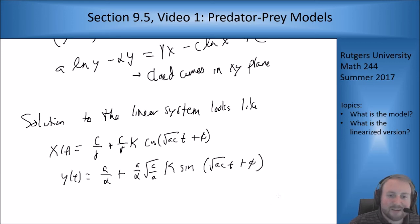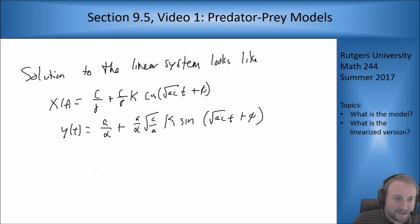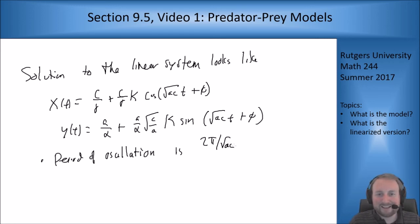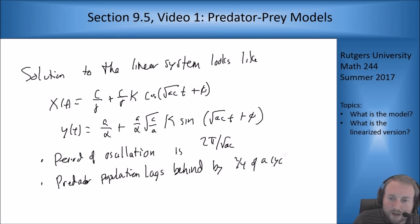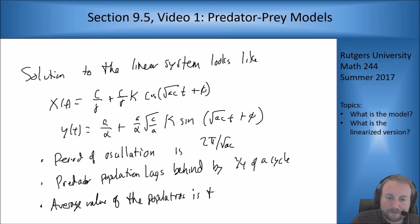And so what we see here is we can get some nice properties out of the linear system based on these equations and we can approximate that they hold for the non-linear system as well. So what can we say out of this? The period of oscillation at least for this system is 2 pi over root ac, to give us an idea of how long it takes for this cycle to repeat itself. The predator population lags behind by a quarter of a cycle. And this just comes from the fact that the predator population is a sine while the prey is a cosine of the same argument. So cosine is always ahead by a quarter of a cycle ahead of sine. And then the last point is the average value of the populations is the equilibrium value, which is also what you would expect because you're oscillating around this point.